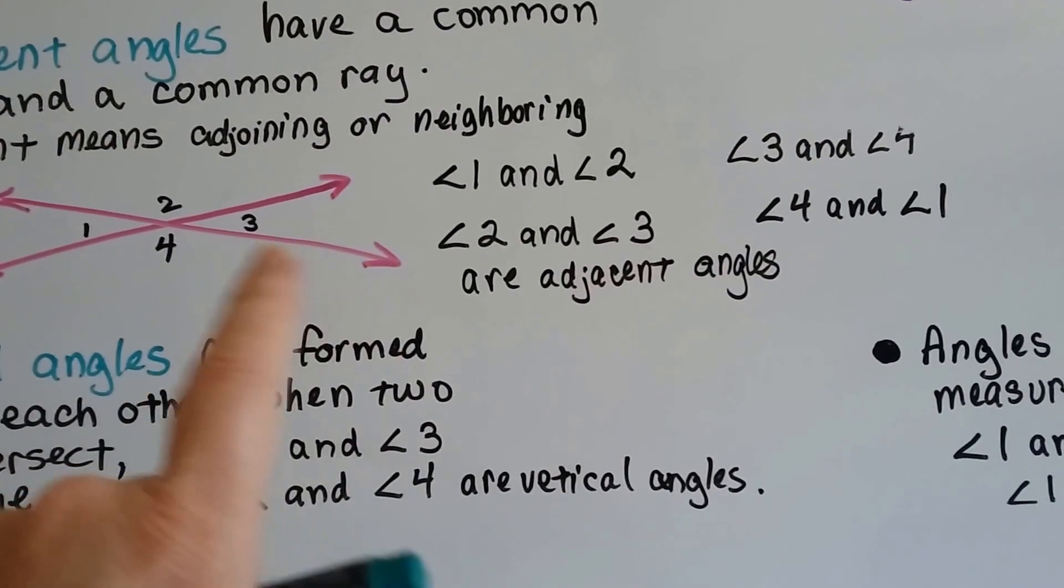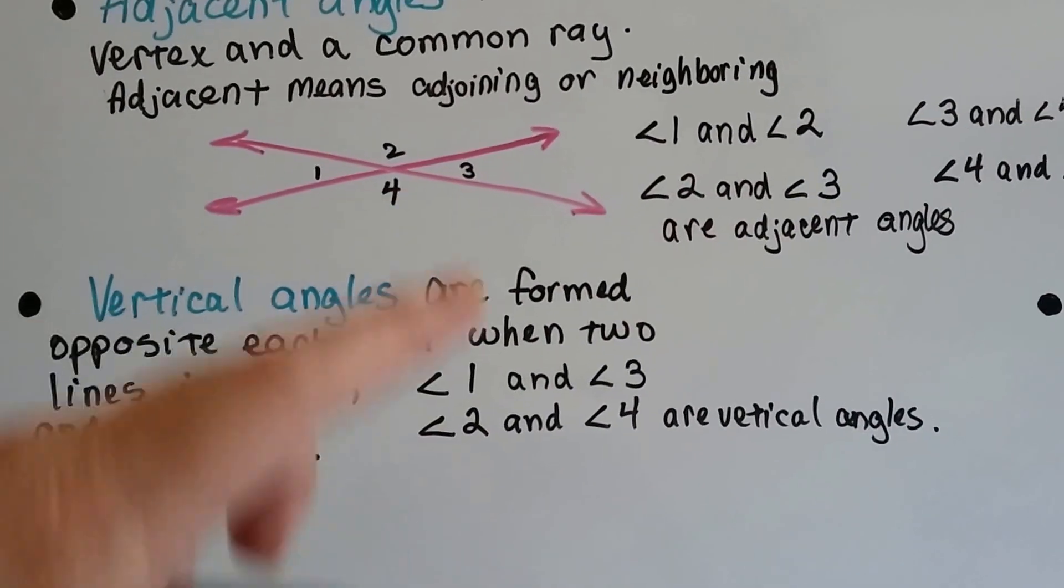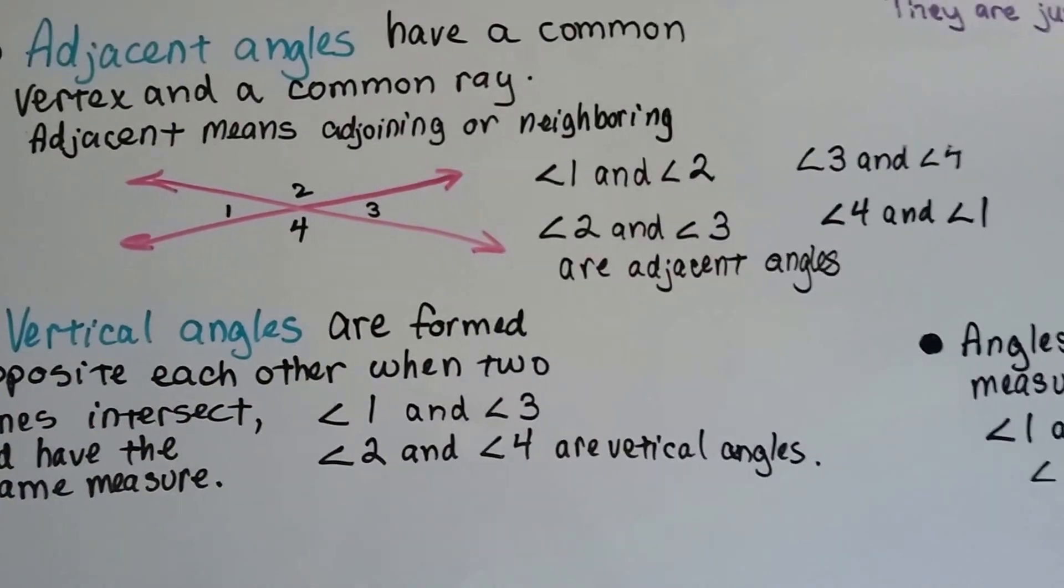For 3 and 4, here's the common ray. Vertical angles are formed opposite each other. So 2 and 4 are vertical, and 3 and 1 are vertical angles.